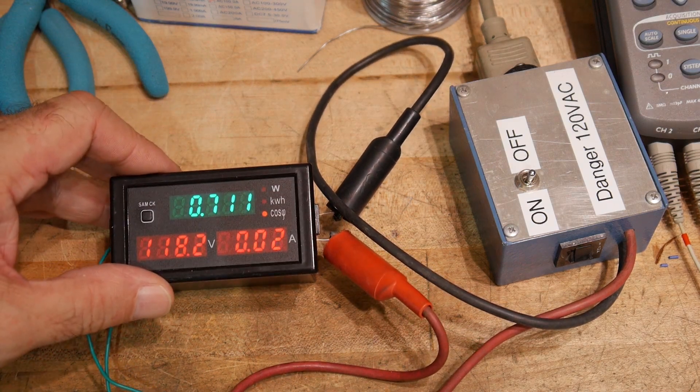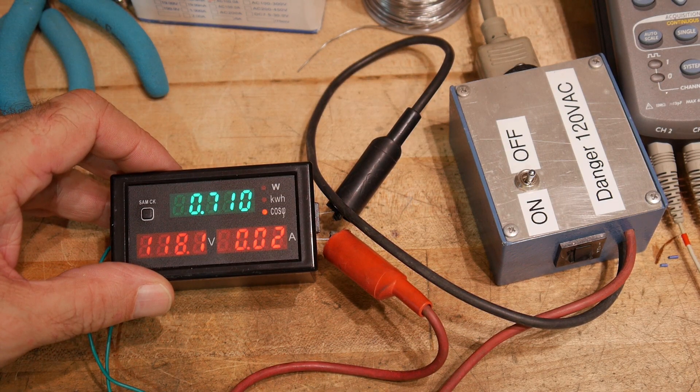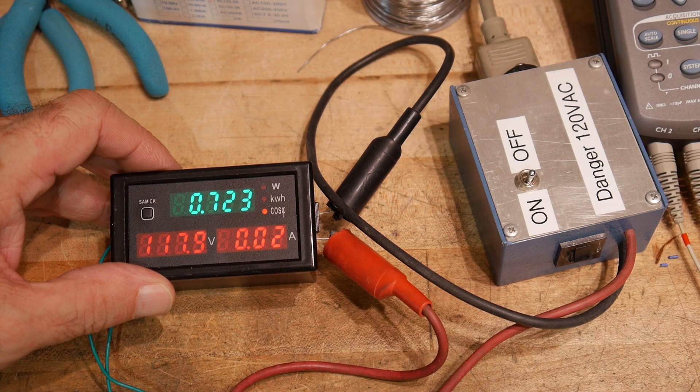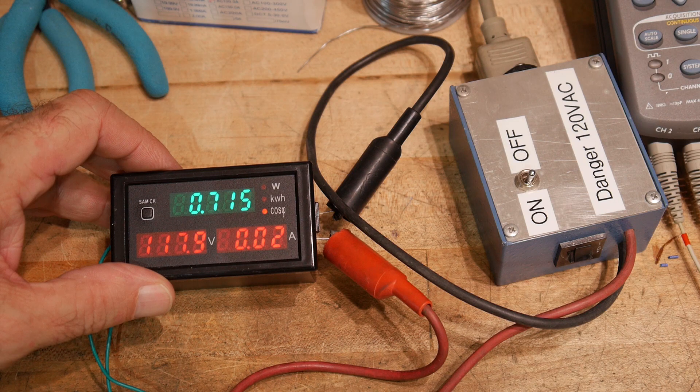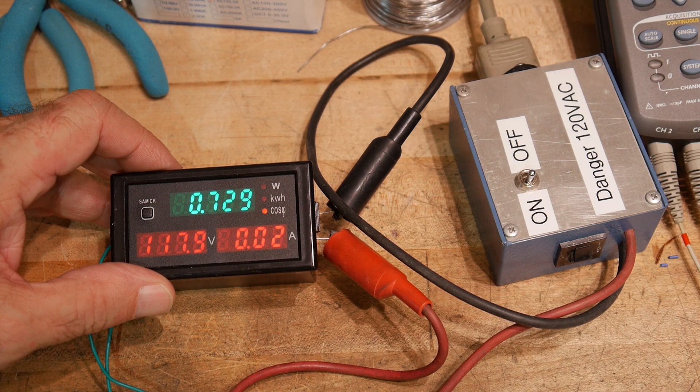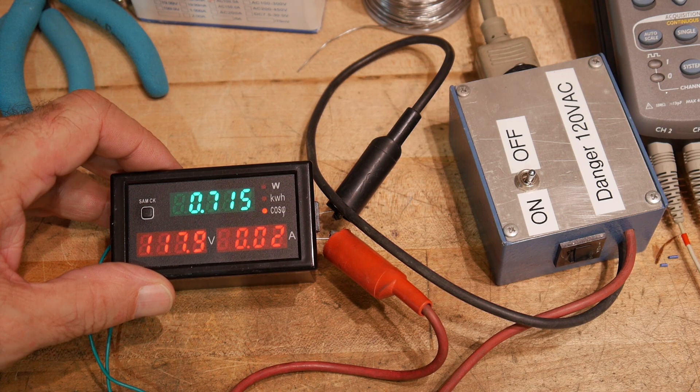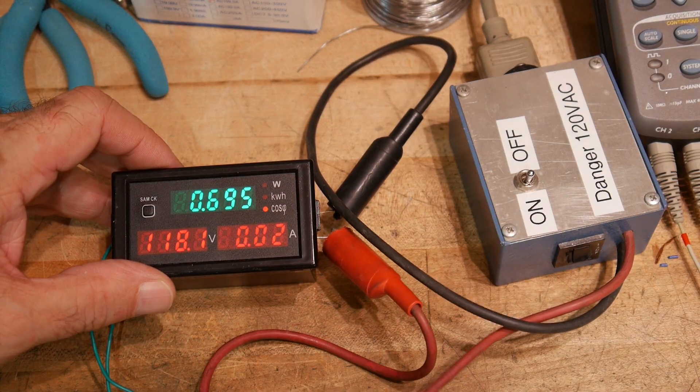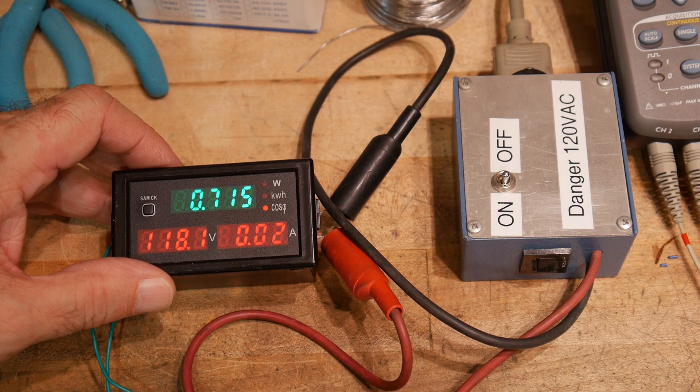So the power factor of this box is 0.72 cosine theta. Yeah. Pretty cool. I'm not really, let's see, we should be able to move this wire through the